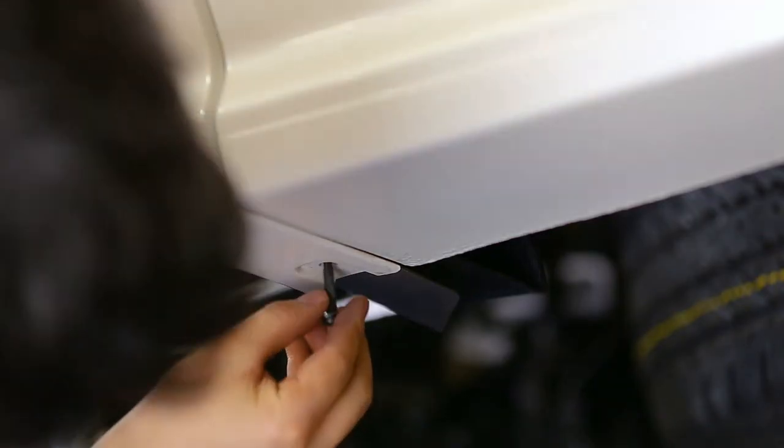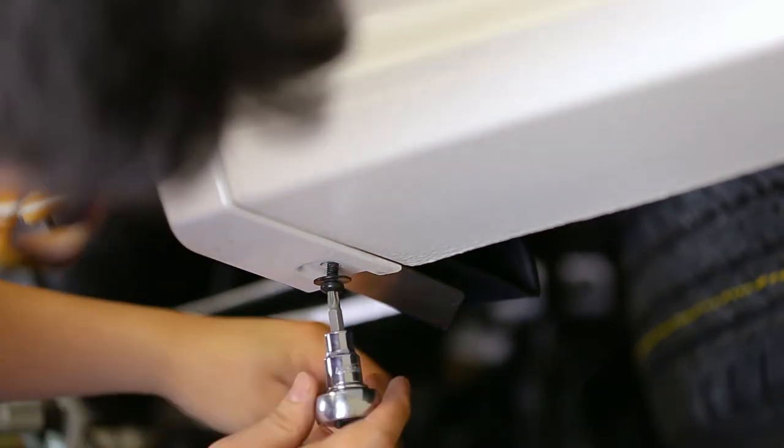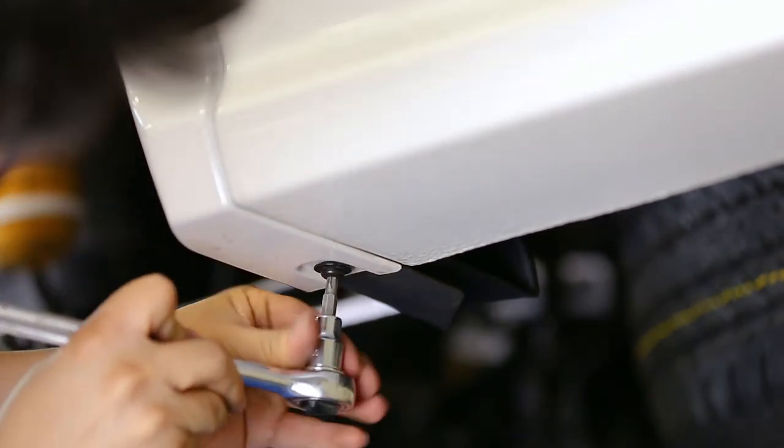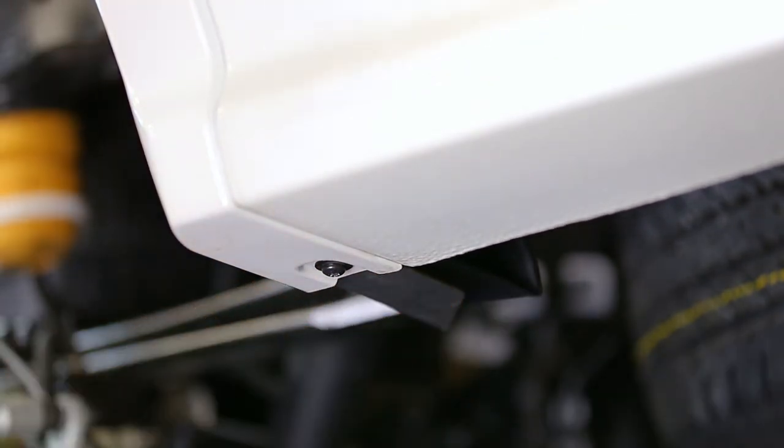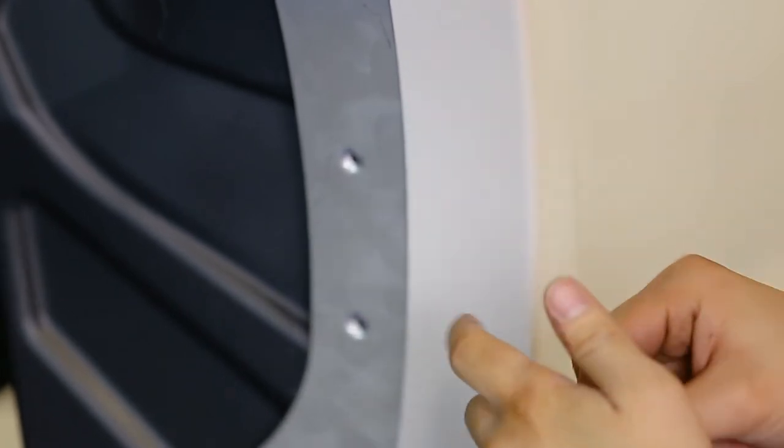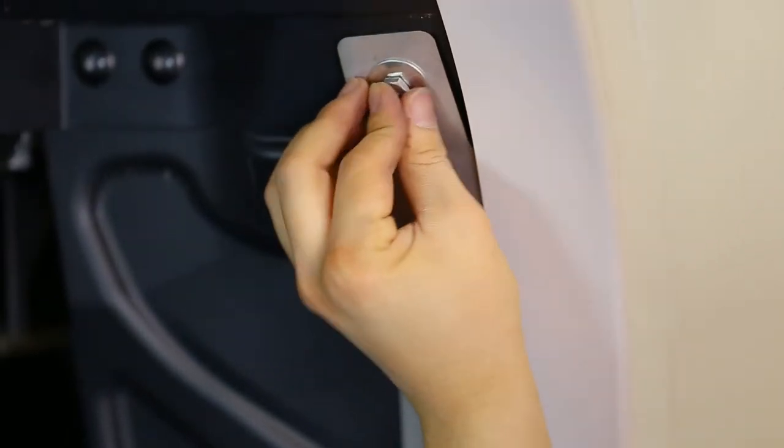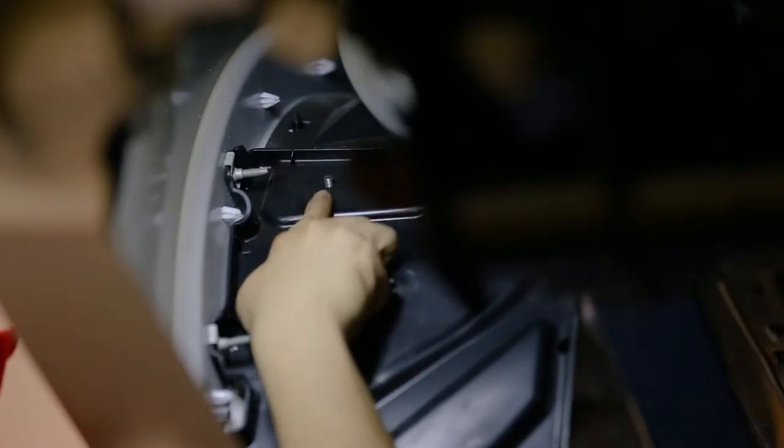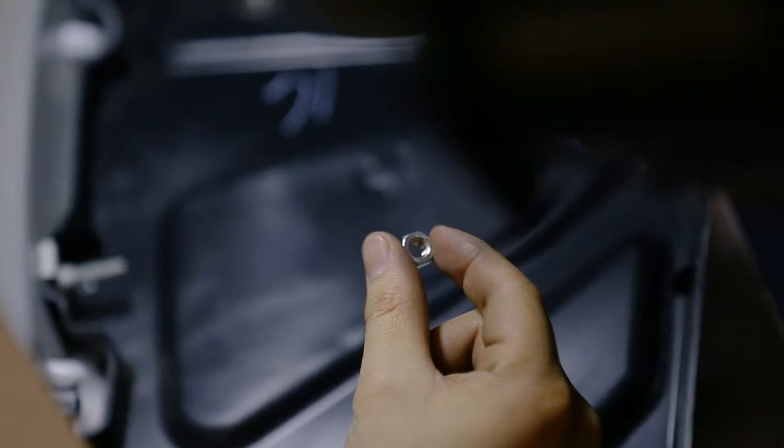Now reinstall the factory bolt through the fender and newly inserted bracket with a T30 Torx drive. Install the top bracket hole with a quarter inch stainless steel bolt and one inch stainless steel washer, and secure it with one inch stainless steel washer, quarter inch lock washer, and quarter inch nut.